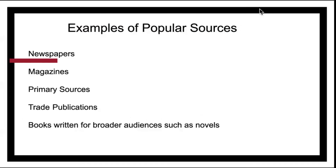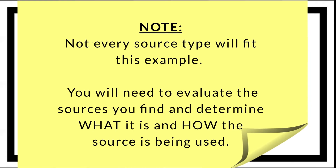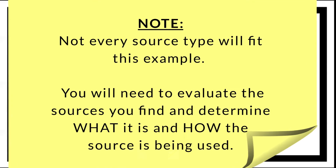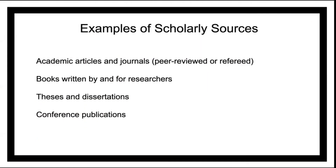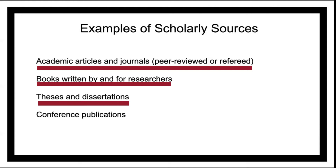Examples of popular sources include newspapers, magazines, primary sources, trade publications, and books written for broader audiences such as novels. Examples of scholarly sources include academic articles in journals — peer-reviewed or refereed — books written by and for researchers, theses and dissertations, and conference publications.